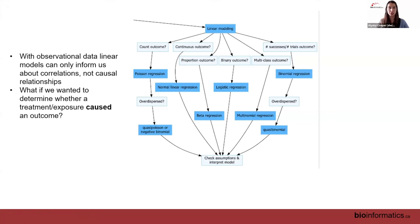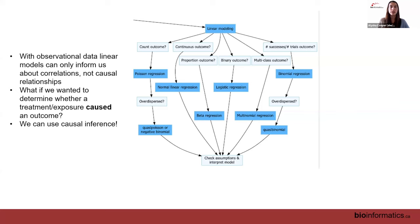If you do have observational data — meaning you didn't randomly assign participants to a treatment group — then when running these models we have to be very careful of interpretation. That's why you'll typically see us say 'the estimated association' instead of 'the estimated effect of A on B,' because with observational data we don't actually know that the predictors are affecting the outcome. It could be the other way around, or something else entirely explaining the observed relationship.